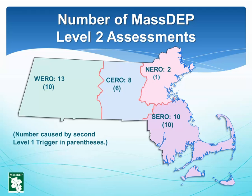Number of MassDEP Level 2 Assessments: This slide shows the number of Level 2 Assessments done by each MassDEP region. As shown by the numbers in parentheses, many were caused by a second Level 1 trigger within 12 months. The other Level 2 assessments were caused by an E. coli MCL violation.